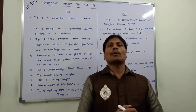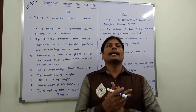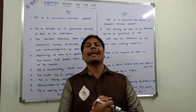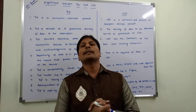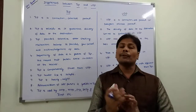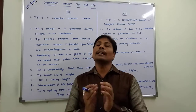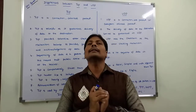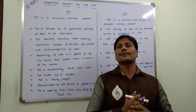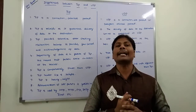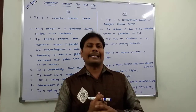UDP is also called a datagram-oriented protocol. The second point: in the case of TCP, we have a guarantee that the transmission of data from sender to receiver is guaranteed to be received by the receiver. Reliability is high in Transmission Control Protocol. But in the case of UDP, there is no reliability — there is no guarantee that the data sent from the sender will be received by the receiver.